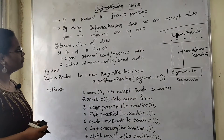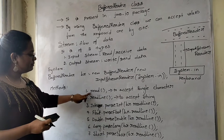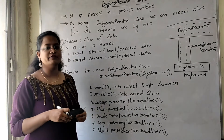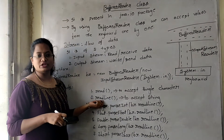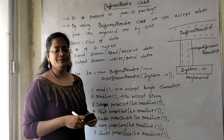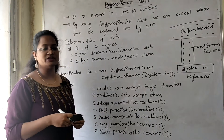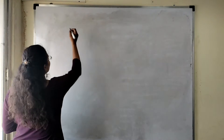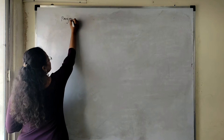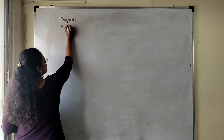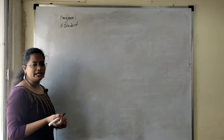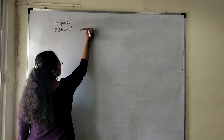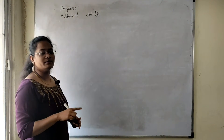Let us see one program — how we can represent BufferedReader Class. The read() and readLine() methods will throw an exception, so we need to handle IOException. I want to accept student details from the keyboard by using BufferedReader Class. Student details can contain ID, name, marks, and gender.